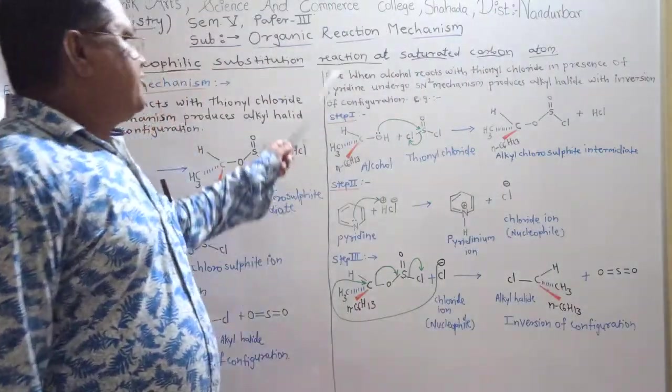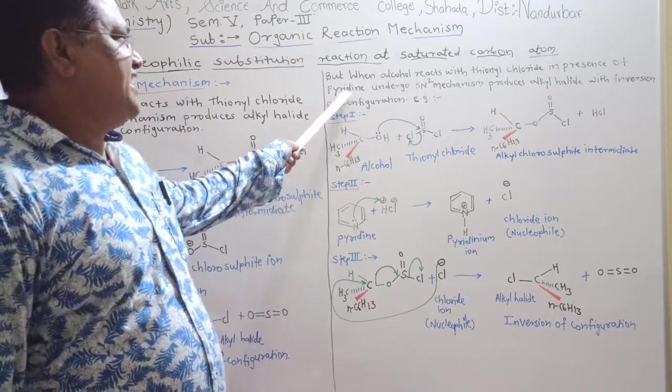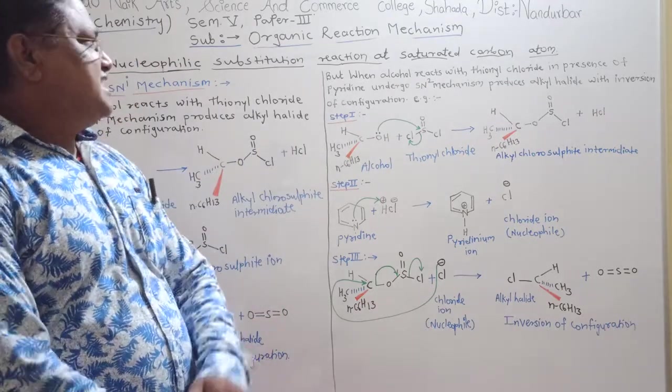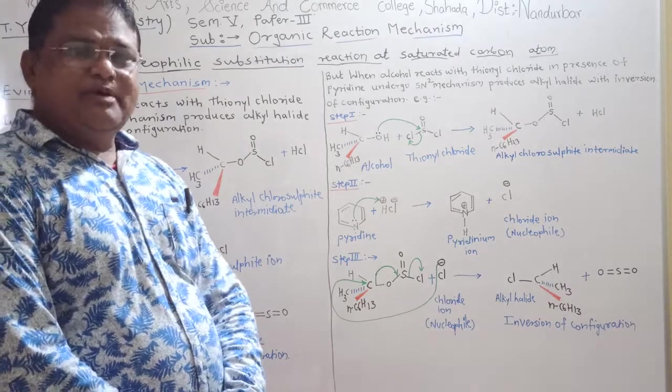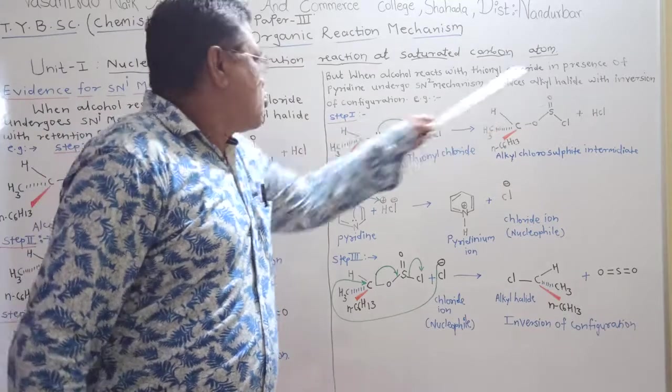But when alcohol reacts with thionyl chloride in presence of pyridine, undergoes SN2 mechanism produces alkyl halide with inversion of configuration.